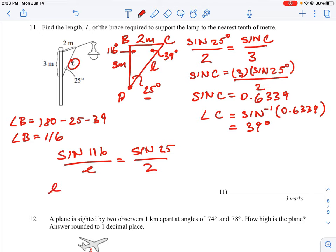So I'm going to have L is equal to 2 times sine of 116 and then I'm going to bring the sine 25 to the bottom. When we isolate L and when I plug that into my calculator I will get a value rounded to one decimal spot around 4.3.